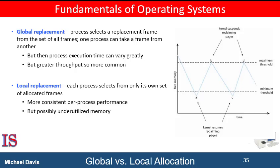Global replacement allows a process to select a replacement frame from a set of all frames, even if that frame is currently allocated to some other process. In other words, one process can take a frame from another process.